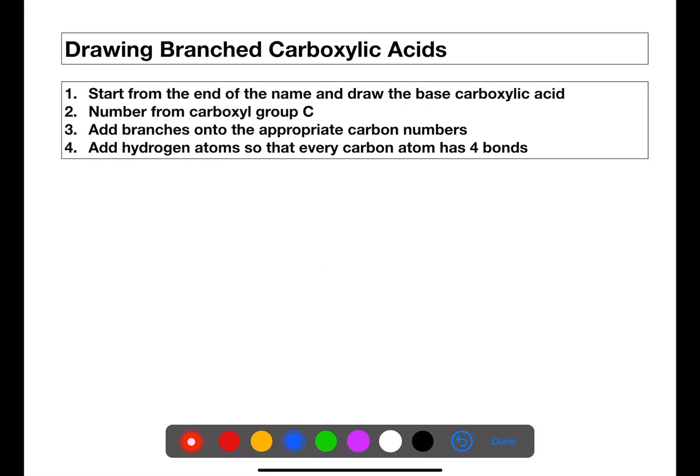Let's have a look at drawing branched chain carboxylic acids. The first rule is to start from the end of the name and draw the base carboxylic acid. Number from the carboxyl group carbon and then add branches onto the appropriate carbon numbers. You then need to add hydrogen atoms so that every carbon has four bonds.